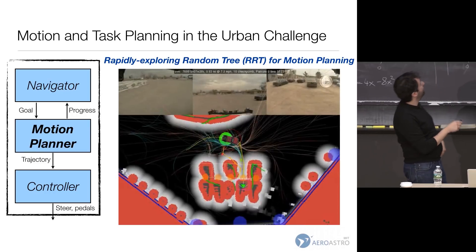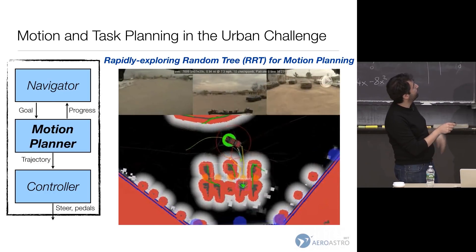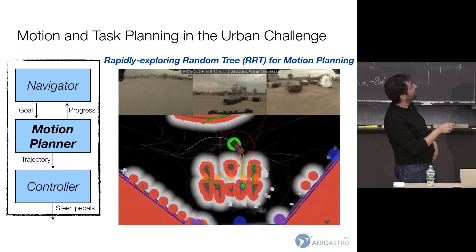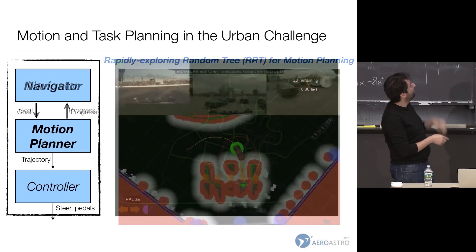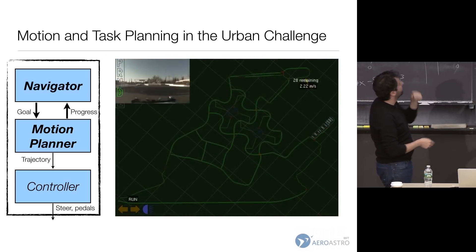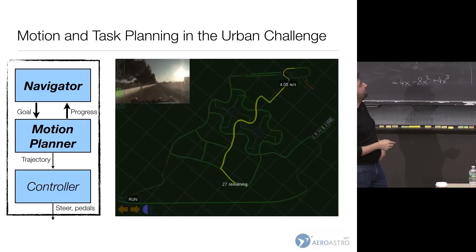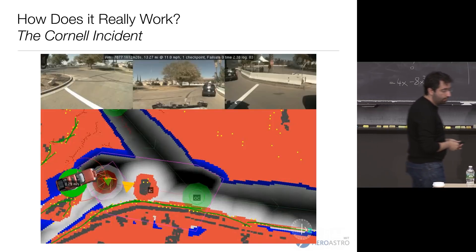I've already shown how the motion planner works — it just computes these trajectories. Here's the goal point, our car finds a path to get there. You can run these things together to get good behavior. It doesn't always go well — let me show you what doesn't work in this kind of work.